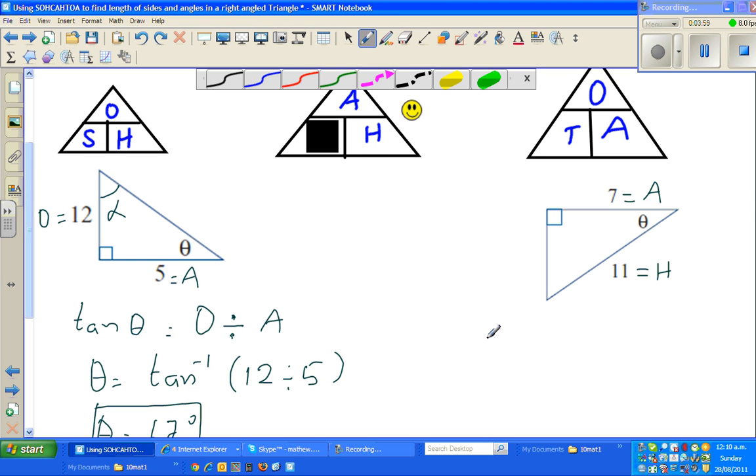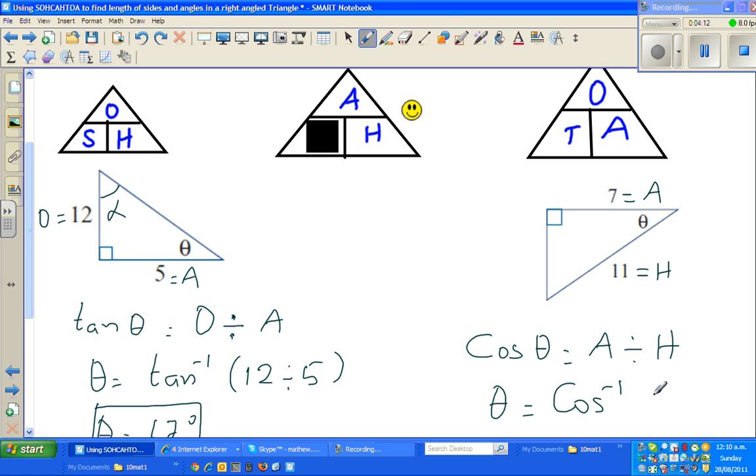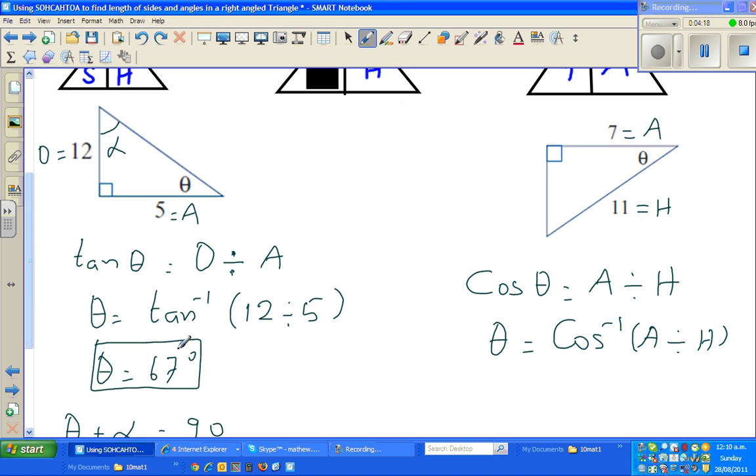Now we write cos theta is A divided by H. A is sitting on the top. So theta is cos inverse of A divided by H. Let me write one step. Always good to write more steps.